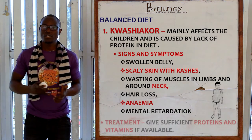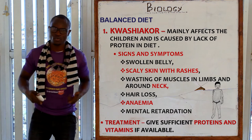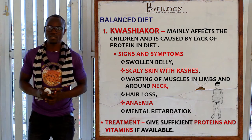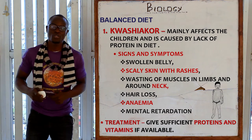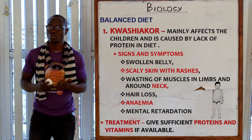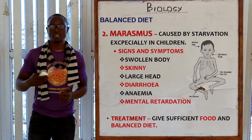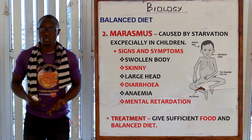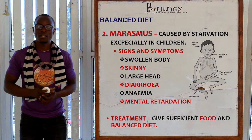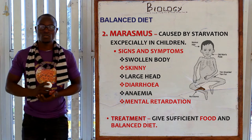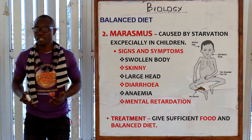Let's begin with kwashiorkor. What is kwashiorkor? It mainly affects children and is caused by lack of protein in the diet. The signs and symptoms include a swollen belly, very thin skin, a very large head, diarrhea symptoms, anemic symptoms, and most victims show signs of mental retardation.